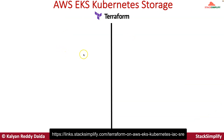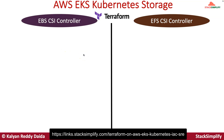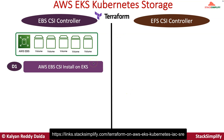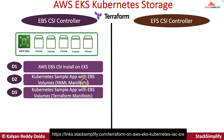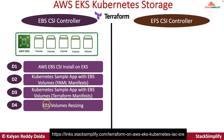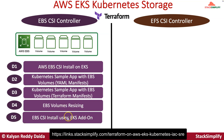As part of Kubernetes storage in AWS EKS, from the EBS CSI controller perspective, we will have a demo automated with Terraform to install the EBS CSI controller on EKS. After that, we will review a Kubernetes sample app with EBS volumes in YAML manifests, then convert those manifests to Terraform. We will also learn EBS volume resizing and EBS CSI install using the EKS add-on — an alternative to Helm release using Terraform.